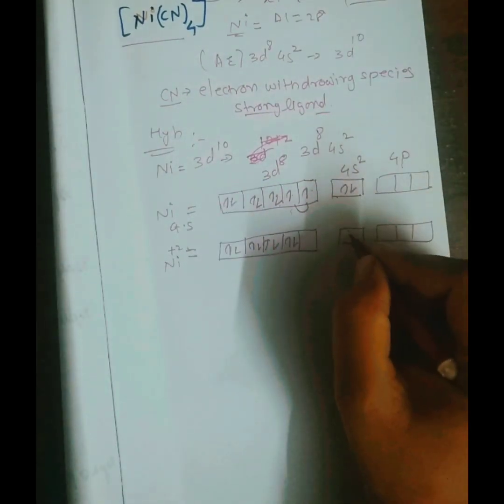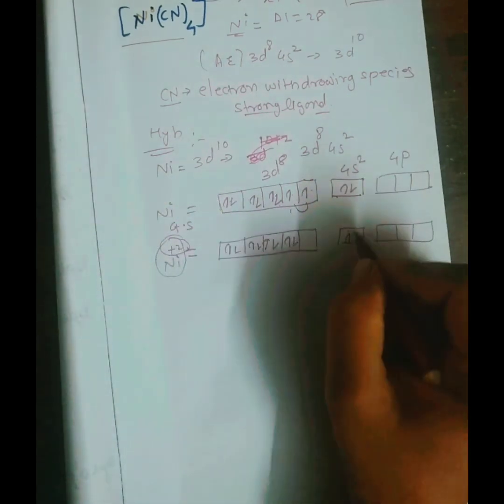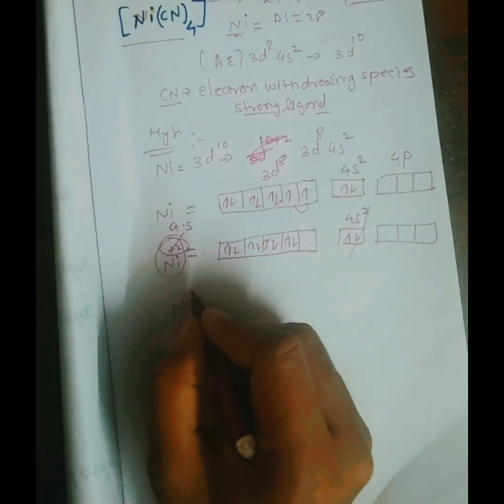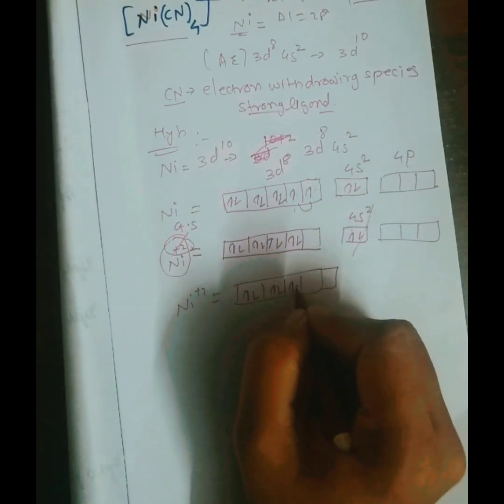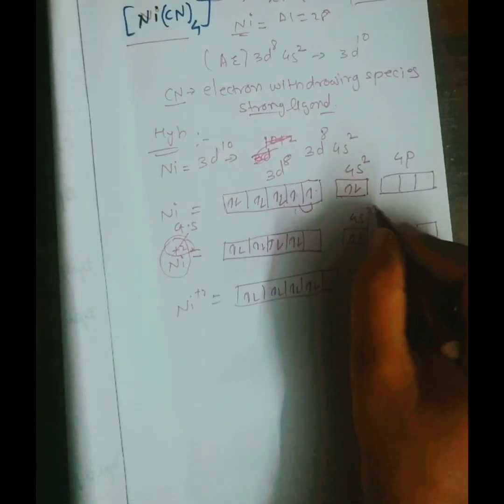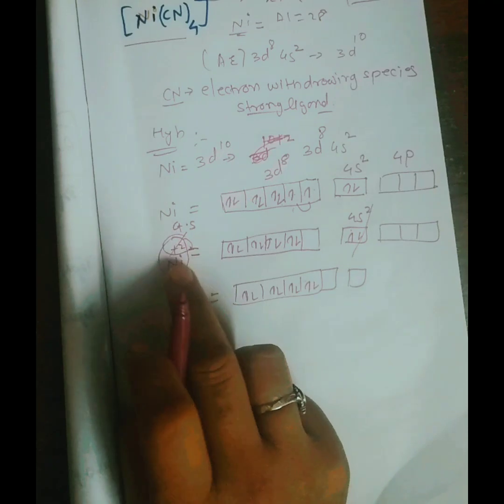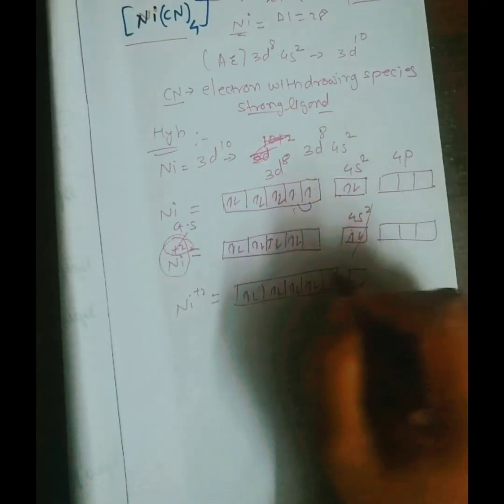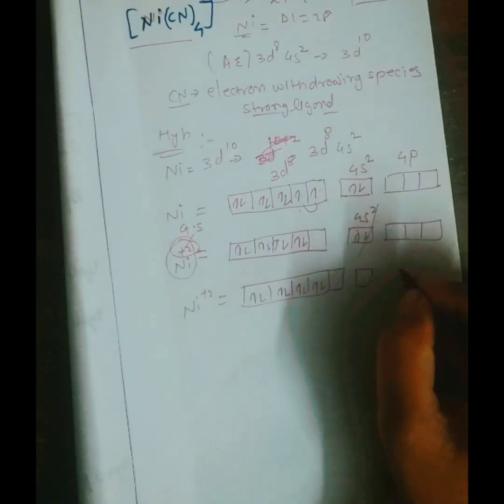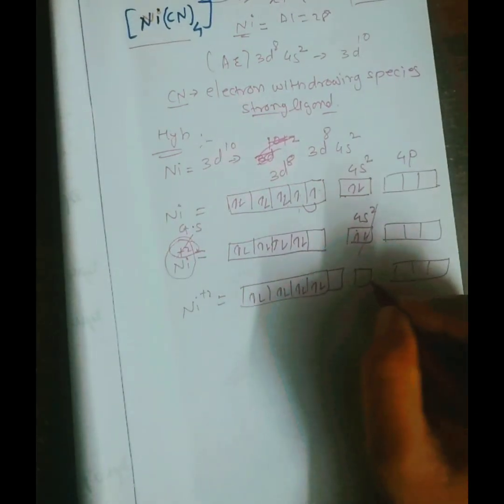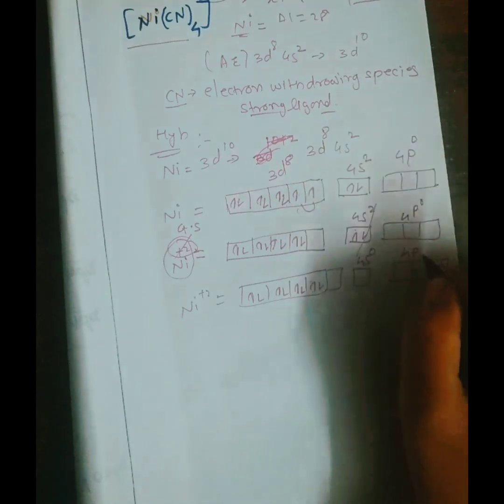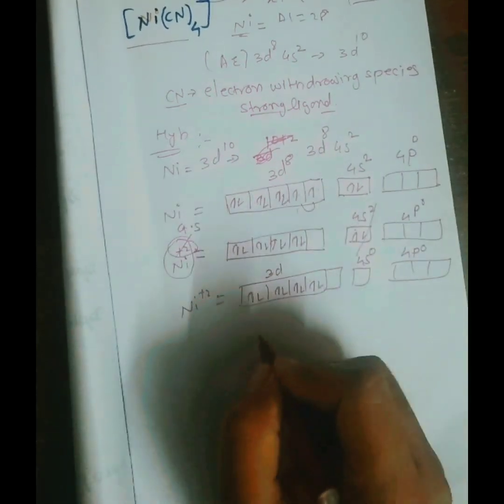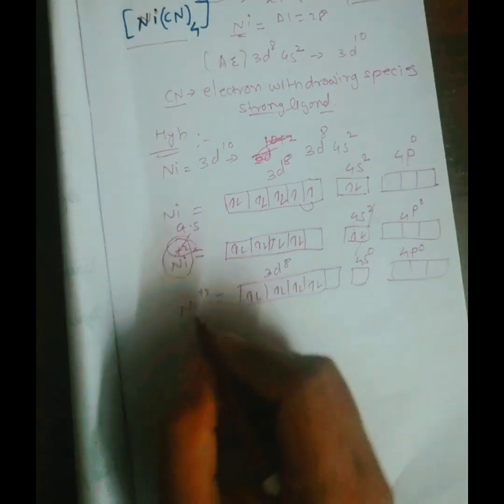When it is in +2 oxidation state, this +2 charge and these 4s² electrons will get cancelled out. So the nickel is 4s² in +2 oxidation state. The hybridization will be like this, and nickel's electrons, the +2 charge and these two electrons will cancel out in the oxidation state. For this, 4s will be empty and 4p is already empty, there is no electron in the 4p orbitals. So this is 3d.